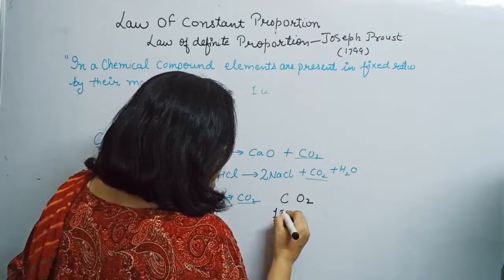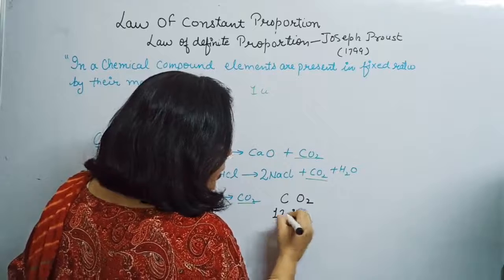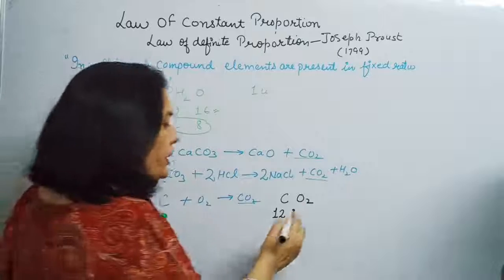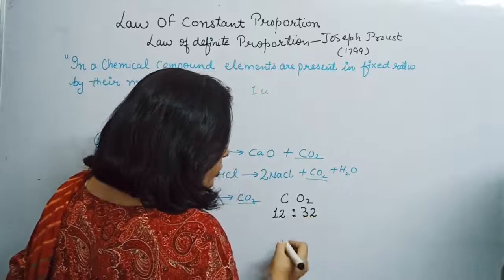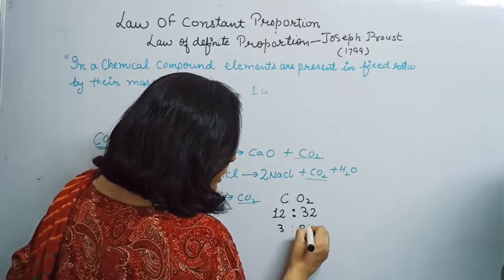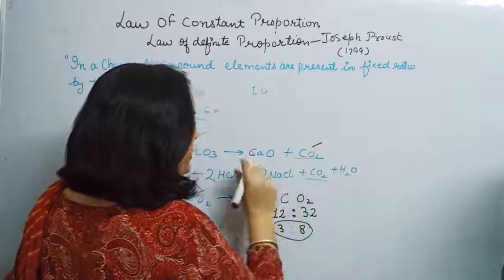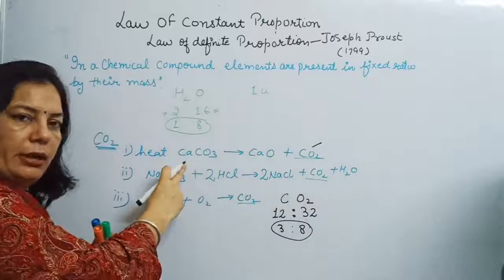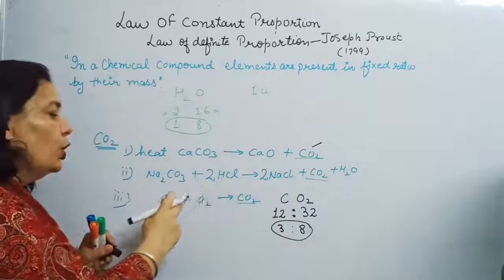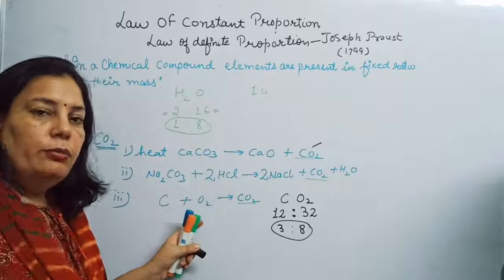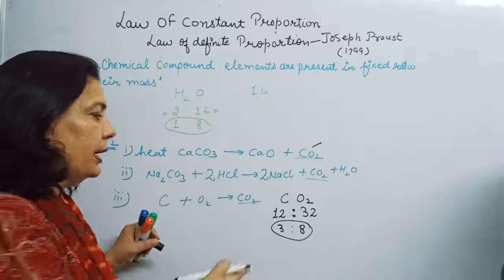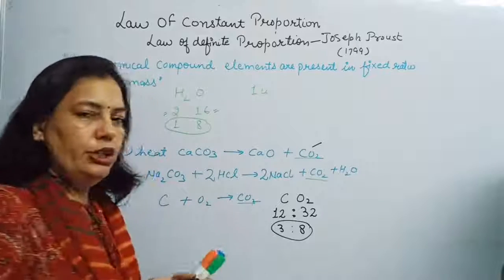The atomic mass of carbon is 12 units. Oxygen is 16 units, and because two atoms of oxygen are present, its total mass is 32 units. The ratio is 3:8. In all three samples — whether from calcium carbonate, from sodium carbonate reacting with hydrochloric acid, or from burning coal — the carbon to oxygen ratio is 3:8.